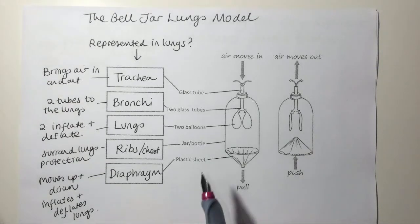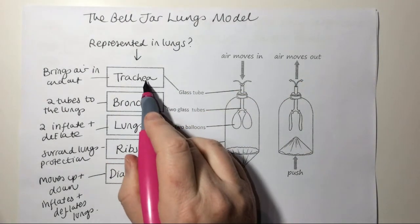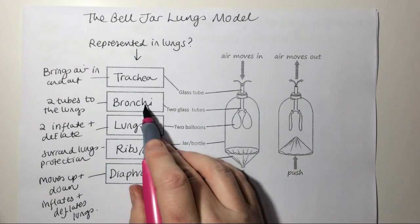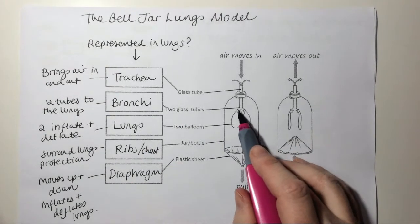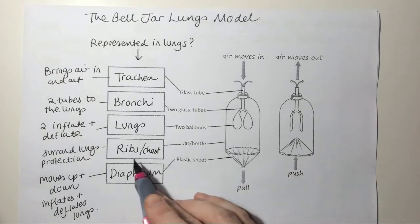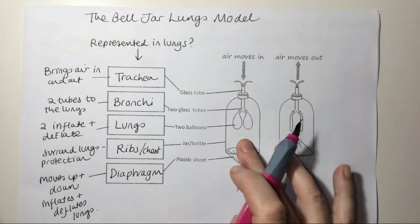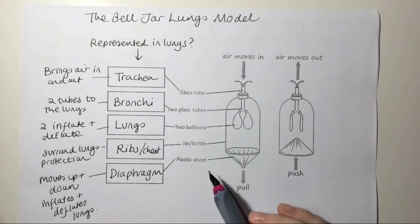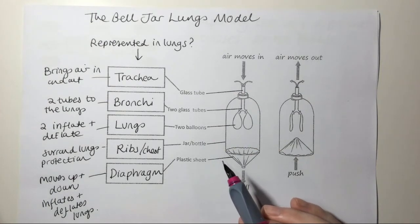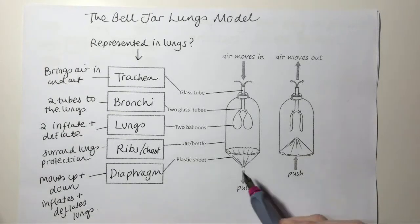We can think about why it's not a good model. The trachea actually has cilia and mucus, which aren't shown here — this is just a glass tube. The bronchi are the same; there's no cilia and mucus in these two glass tubes. The lungs: two balloons don't have a very big surface area and there are no alveoli. The bottle or jar is a continuous piece of glass or plastic, whereas the ribs are individual. And the diaphragm — we have to control that ourselves manually here, whereas in our real bodies it's a sheet of muscle that contracts and relaxes, partly controlled by the brain.